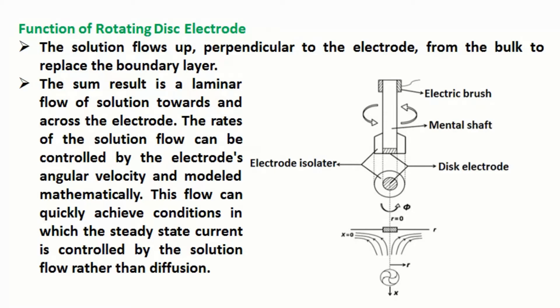The sum result is a laminar flow of solution towards and across the electrode. The rates of the solution flow can be controlled by the electrode's angular velocity and modeled mathematically. This flow can quickly achieve conditions in which the steady state current is controlled by the solution flow rather than diffusion.